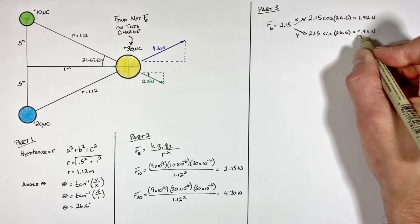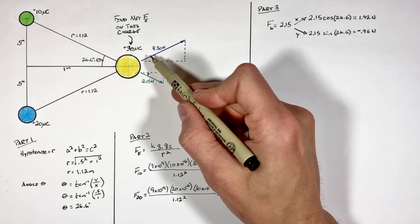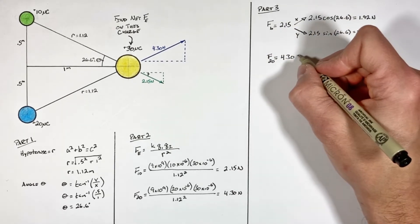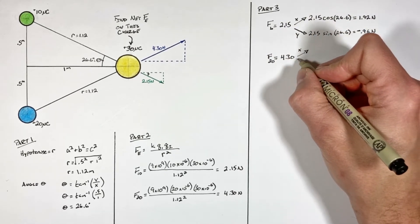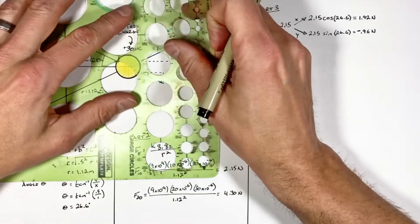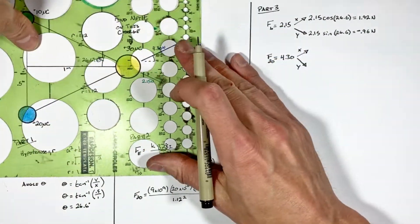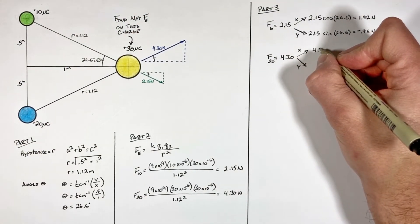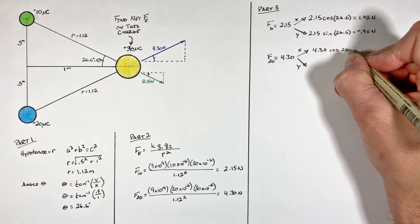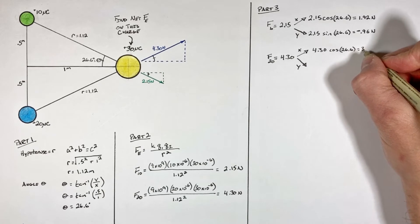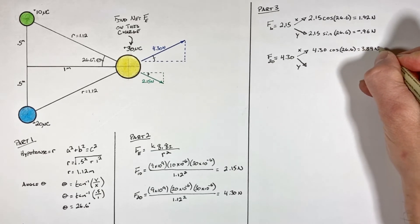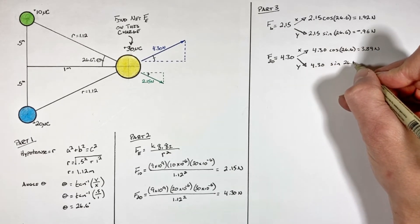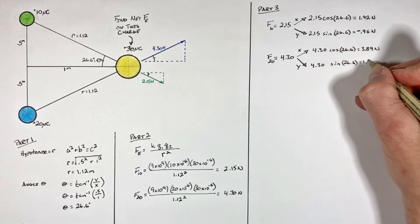Now we break up the 4.30 newton force in a similar fashion. It has both horizontal and vertical components, and again this angle is the same 26.6 degrees. Horizontally we have 4.30 times cosine of 26.6 degrees, which equals 3.84 newtons. Vertically we have 4.30 times sine of 26.6 degrees, which is 1.92 newtons directed upward.